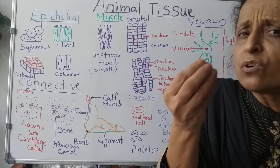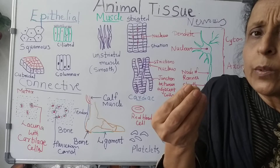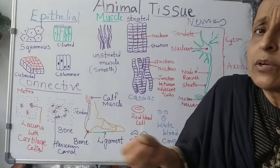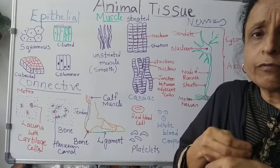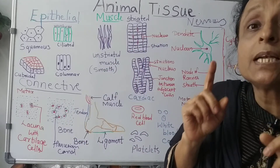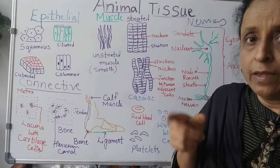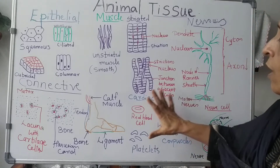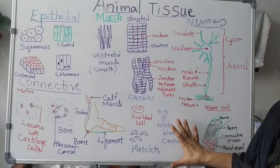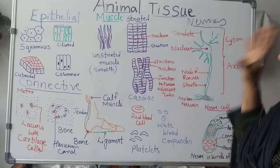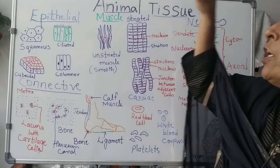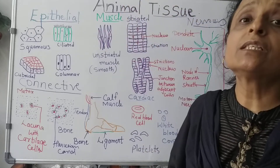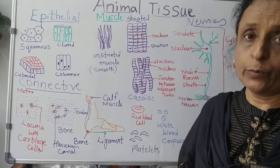The colorless liquid that carries oxygen to the nooks and crannies of the body is lymph. Now, the next tissue is muscle tissue.